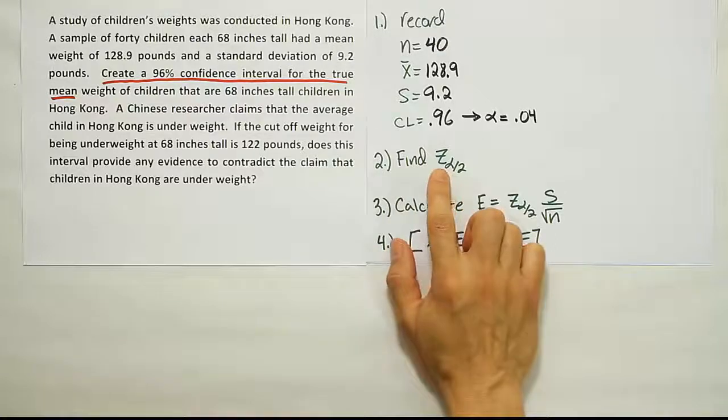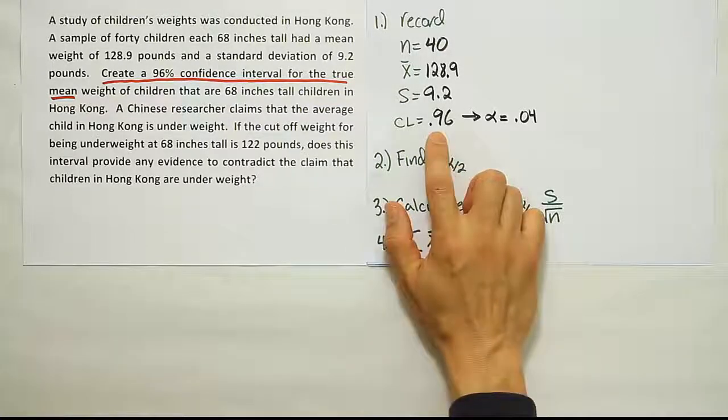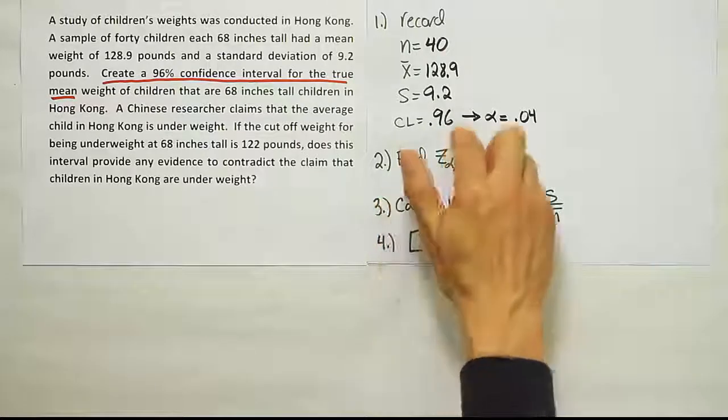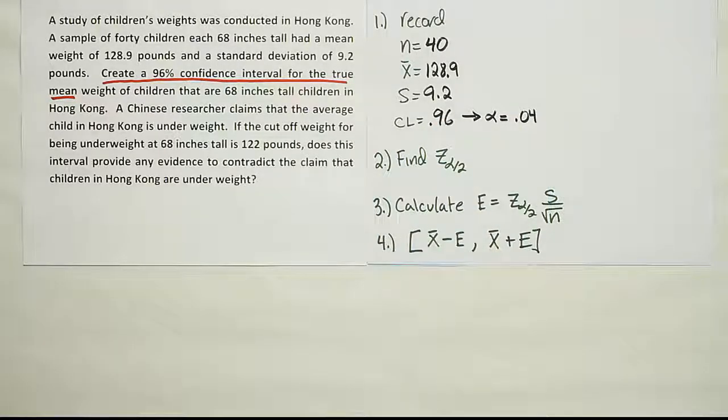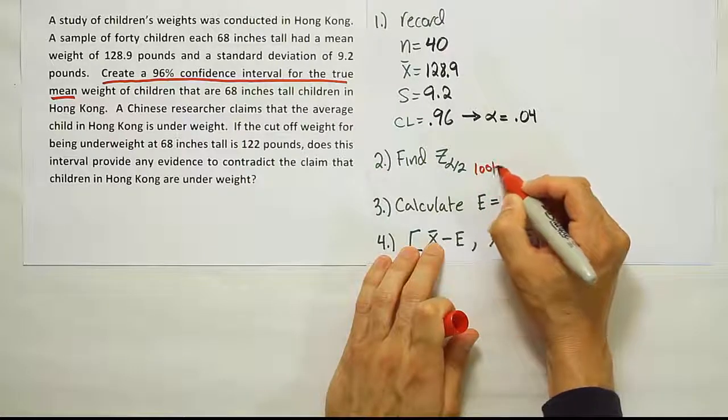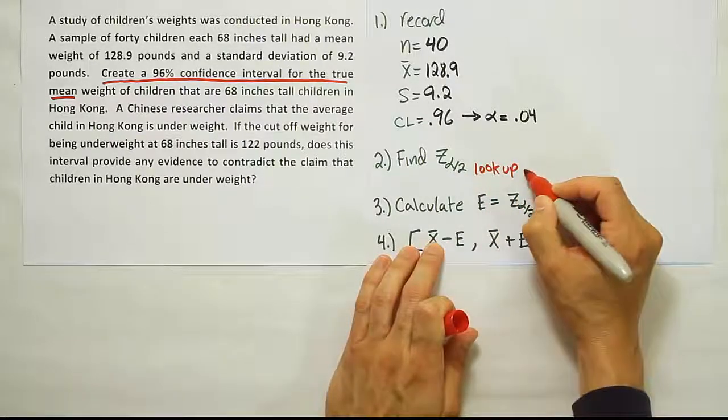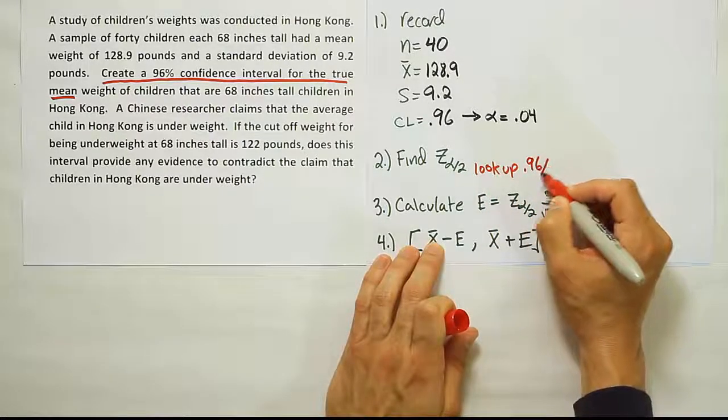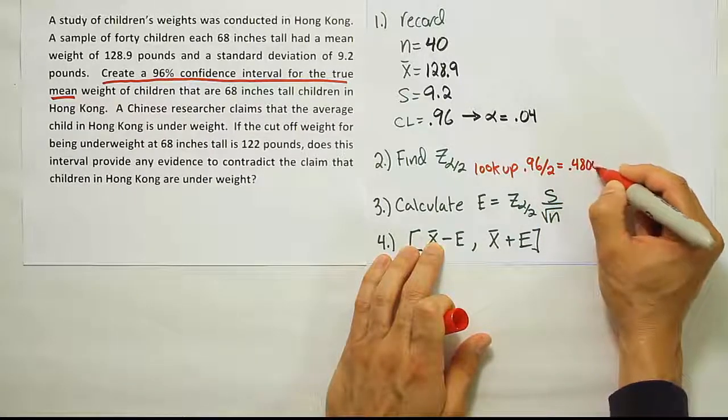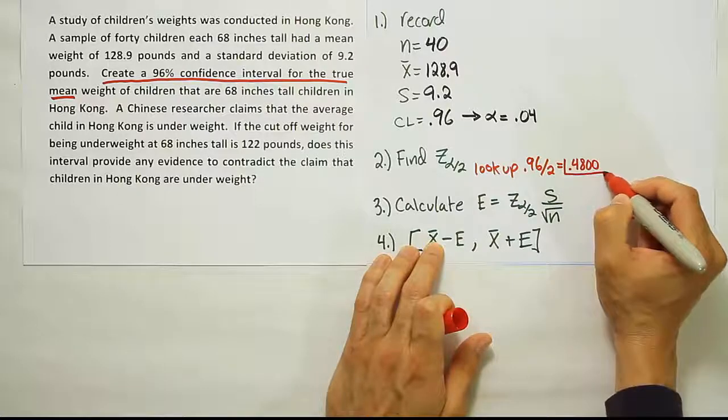So for step two, when we want to find the critical z-value, we're going to take that confidence level, chop it in half, and then look that up on the curve. So let's go ahead and do that then. Let's divide that in half and look it up. So what I'm going to do is write a little note to ourselves here to say that we're going to look up 0.96 divided by 2. If you work that out, you'll get 0.4800. That's the amount we're going to look up.